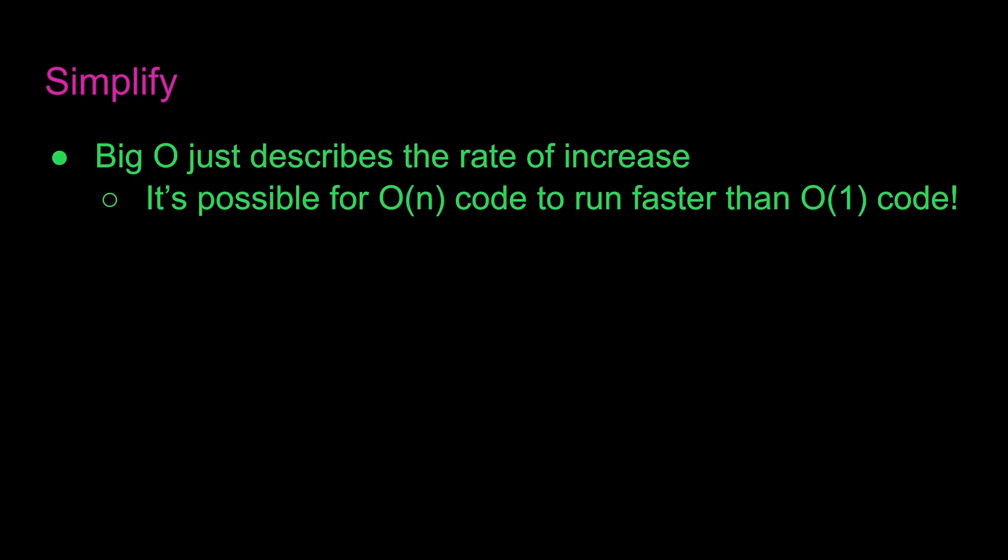Now let's talk about simplification. Big O just describes the rate of increase. It's actually possible for O(n) code to run faster than O(1) code. Say O(1) is a one-hour drive. O(n) is a 10-minute electronic transfer. Therefore, we can just drop the constants, because all we care about is how the algorithm scales based on the input.